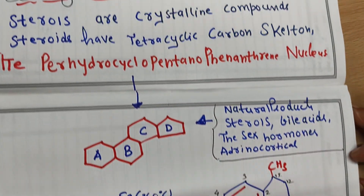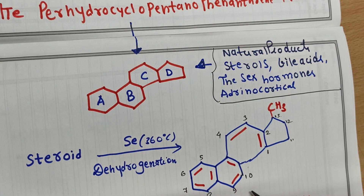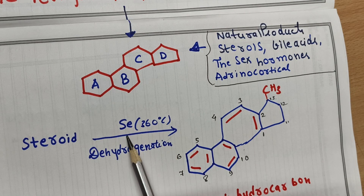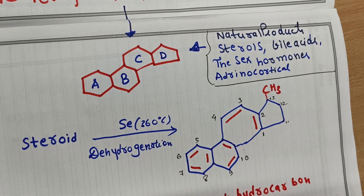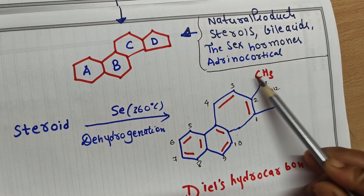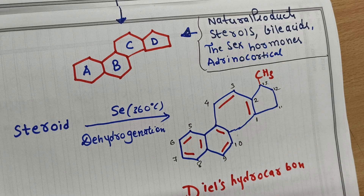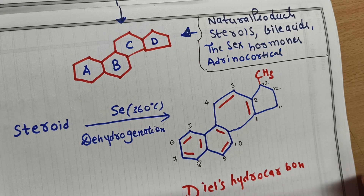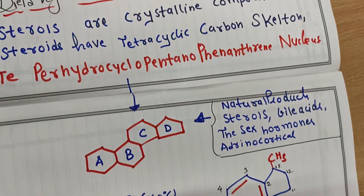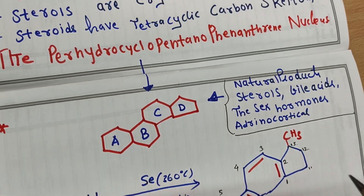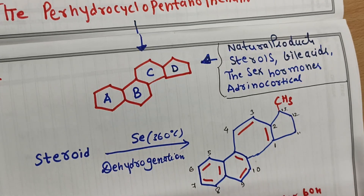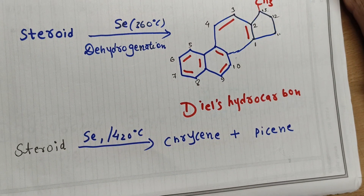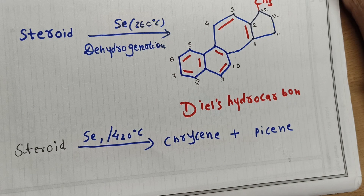In every steroid, a structure known as Diels' hydrocarbon is present as the basic structural unit. Whenever any steroid undergoes distillation with selenium at 360°C, we obtain Diels' hydrocarbon. If the temperature is raised further from 360°C to 420°C, we get chrysene and pyrene as products.